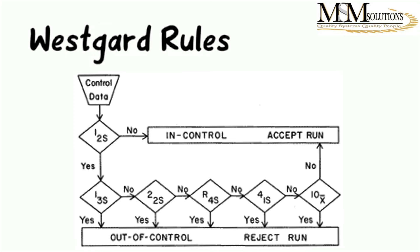If they're not — maybe one is at this point, another is at the mean, sitting randomly across the limits — then you move on to the next rule. You now look at 10 numbers: this number relative to nine others before it. If there are 10 consecutive numbers sitting on the same side of the mean, you have a 10x violation — a bias situation — and you reject that run. If not, you accept and report.